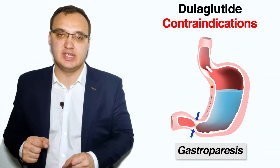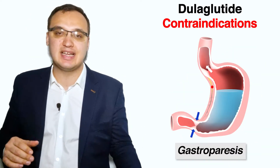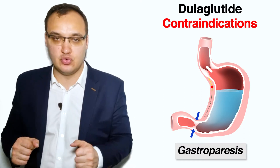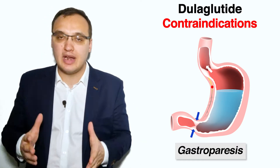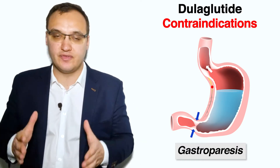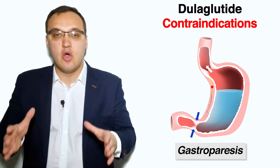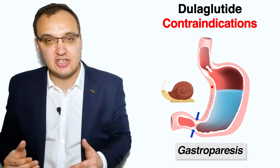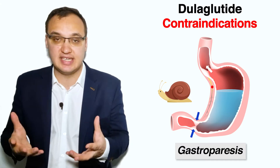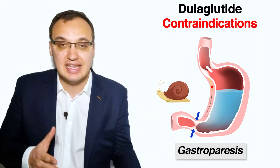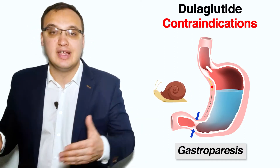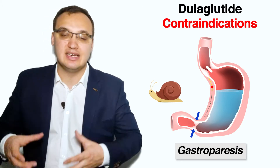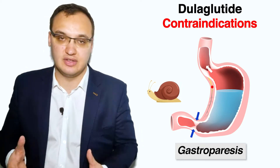The last contraindication is gastroparesis, which means the patient is having difficulty digesting food. As mentioned, one of the mechanisms of GLP-1 receptor agonists is to slow down gastric emptying. If the patient already has difficulty digesting food and it is slowed down even further, that can be dangerous — and if that is the case, then dulaglutide is not advised.